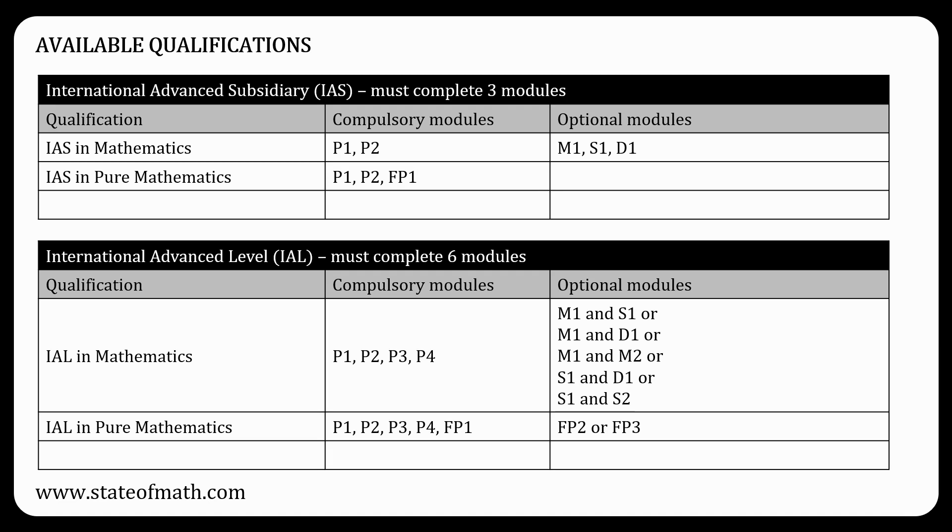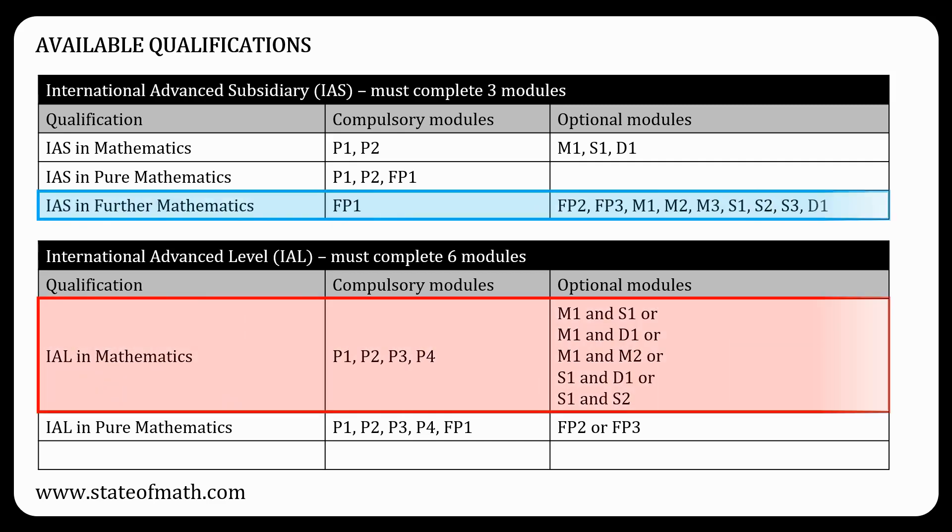So now, if you decide to go for one and a half A-levels, then you will need to complete a total of nine modules and get the IAL in mathematics and the IAS in further mathematics.